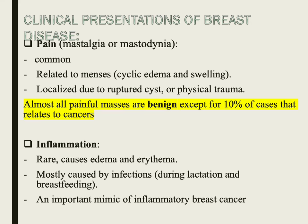Regarding clinical presentations of breast disease: pain, also called mastalgia or mastodynia, is a common symptom often related to menses due to cyclic edema and swelling from the menstrual cycle. Pain can also be localized due to lesions like ruptured cysts or fat necrosis. However, painful masses are almost always benign — only 10% can be related to cancer. Inflammation is a rare presentation, usually associated with edema and erythema. The most common cause is infection, particularly related to lactation and breastfeeding. Importantly, inflammation can mimic inflammatory breast cancer, which will be discussed in the upcoming lecture.